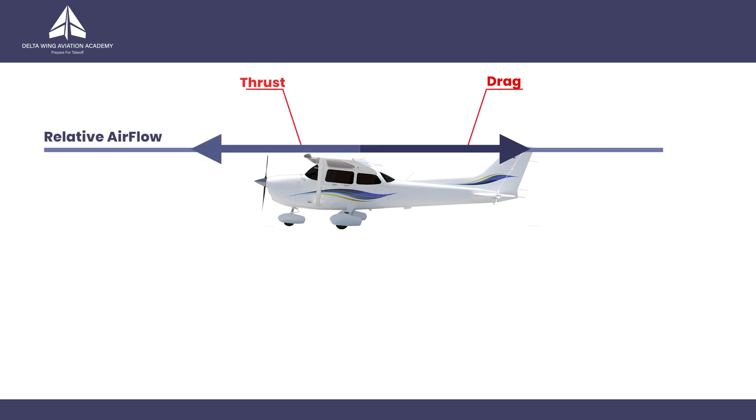Airplanes generate thrust to overcome drag. Drag is the air resistance that opposes flight. It acts parallel and in the same direction as the relative airflow, and it's a relentless force that deserves thorough treatment and your full attention.